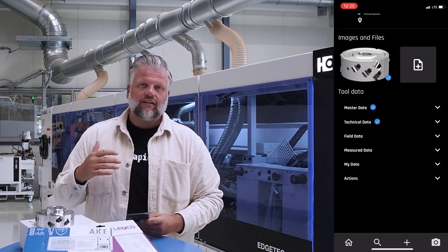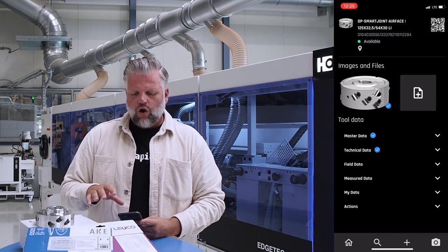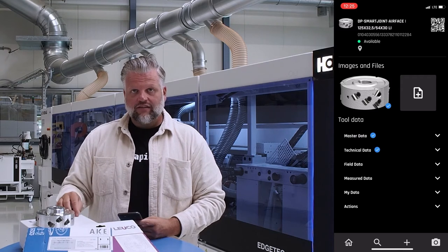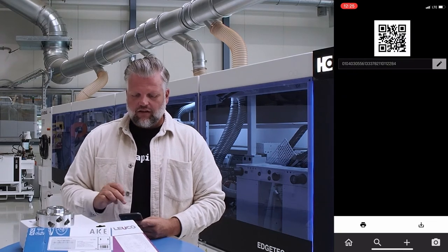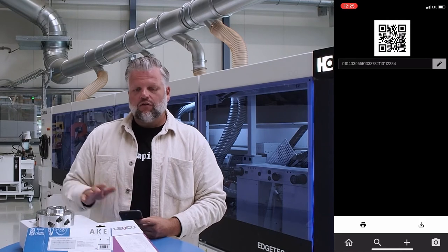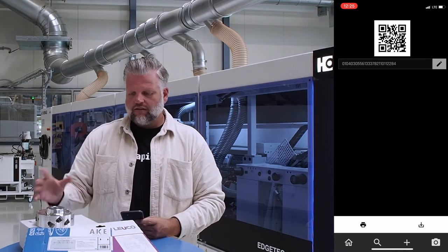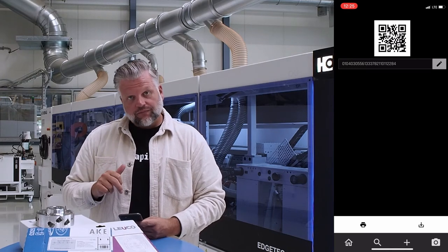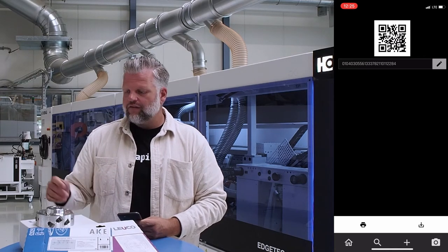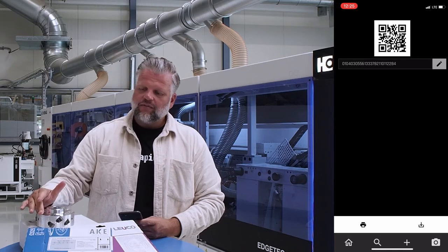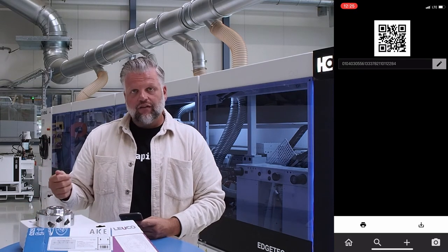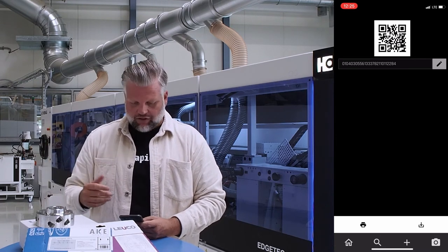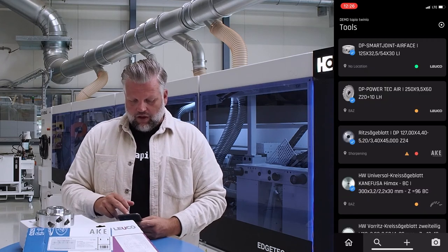When you add a tool to Twinio, a unique ID is created for every single tool. You can print out the QR code and attach it to packages, boxes, or plastic labels. Using the app's built-in scanner, you can scan DMC codes, barcodes, or QR codes to identify tools and perform actions quickly.